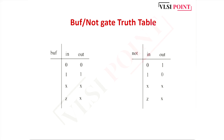Here I have considered four different values: 0, 1, x, and z. In case of buffer: when input is 0, output is 0; when input is 1, output is 1; when input is unknown, output is also unknown; and in case of high impedance, output is unknown. Similarly, in case of not gate: when input is 0 output is 1, when input is 1 output is 0. For unknown or high impedance, output is unknown.